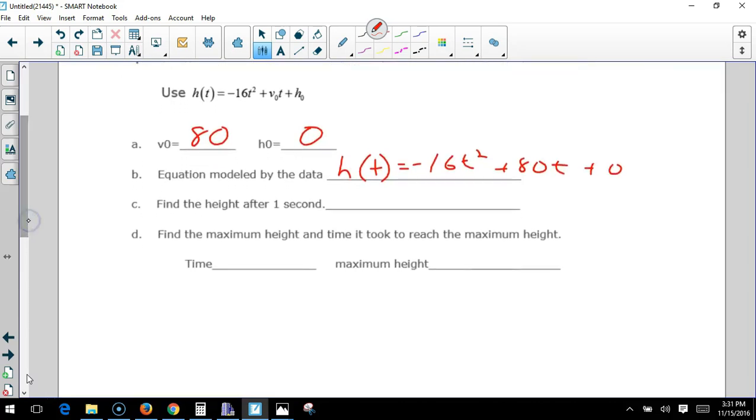Find the height after one second. We plug 1 in. So 1 squared times negative 16 is negative 16, plus 1 times 80 plus 0. So 80 minus 16 is 64 feet. Another way to do that is to go to y equals, put in negative 16x squared plus 80x, then go to your table and look at 1 and it says 64 feet.